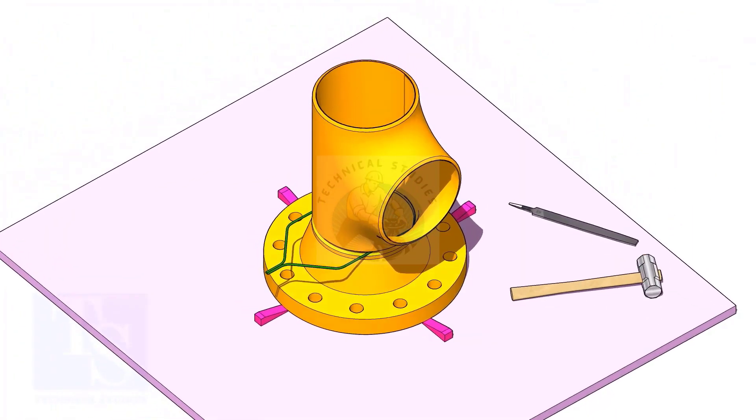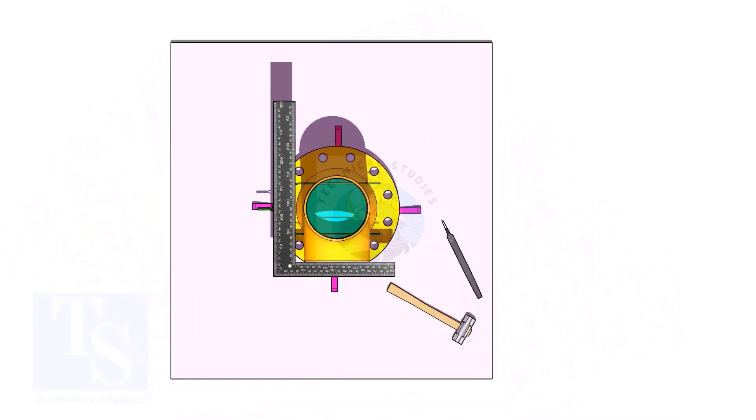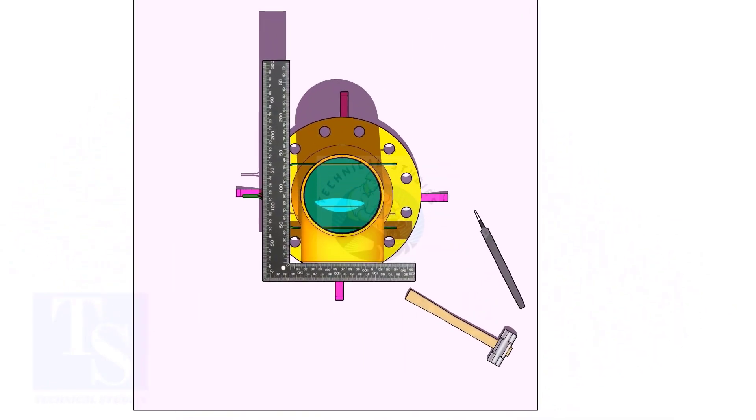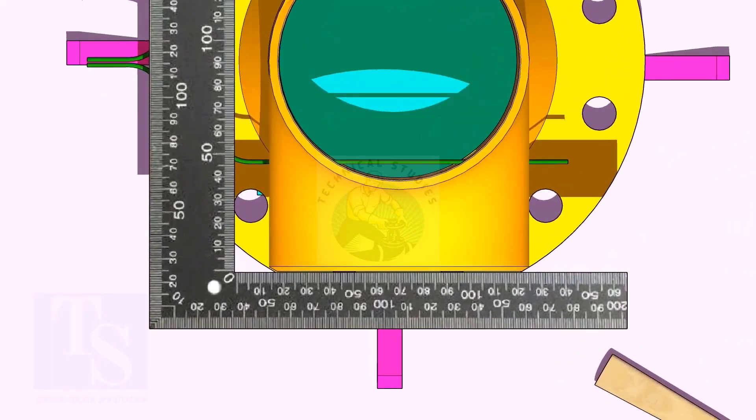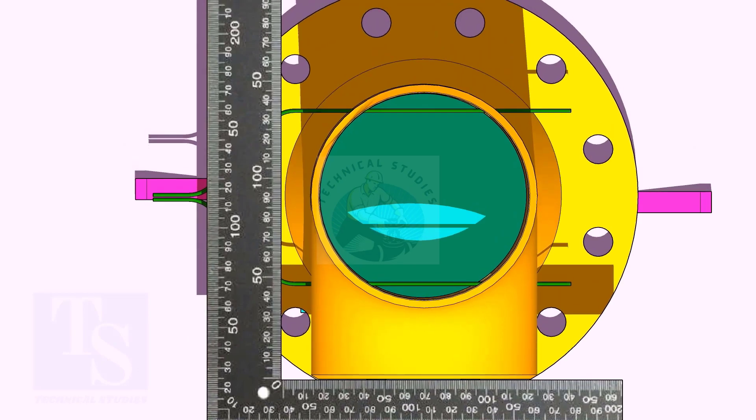Put the tee on the flange. Match the hole center of the flange and the tee face as shown. Correct the overlap.